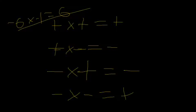What about 11 times negative 11? What's 11 times 11? That's 121. And since they're different signs, we're going to have negative 121.